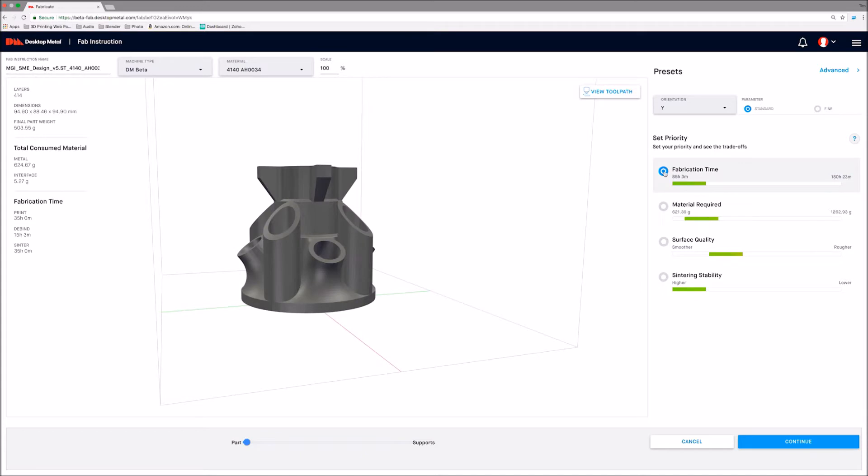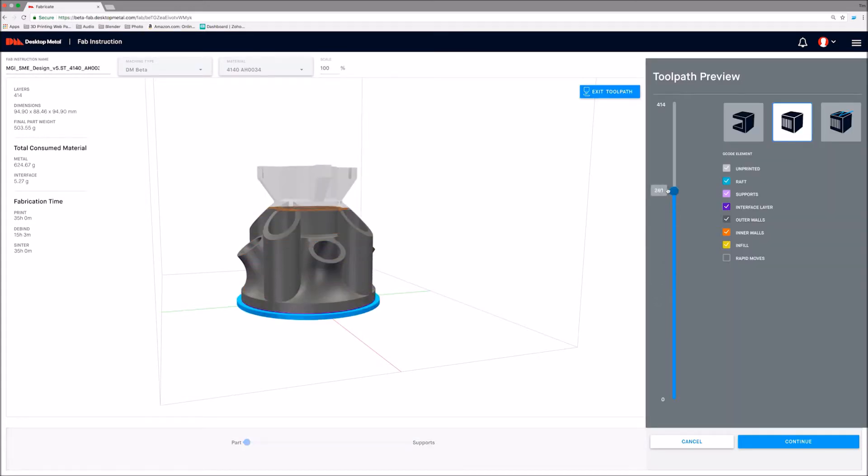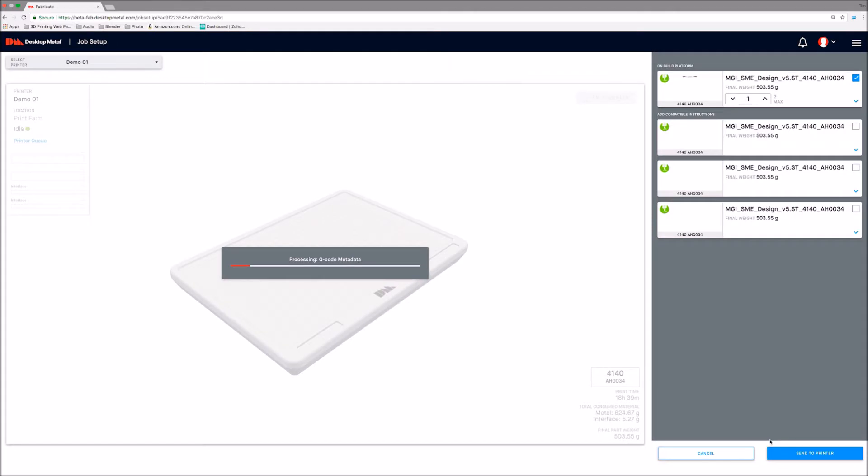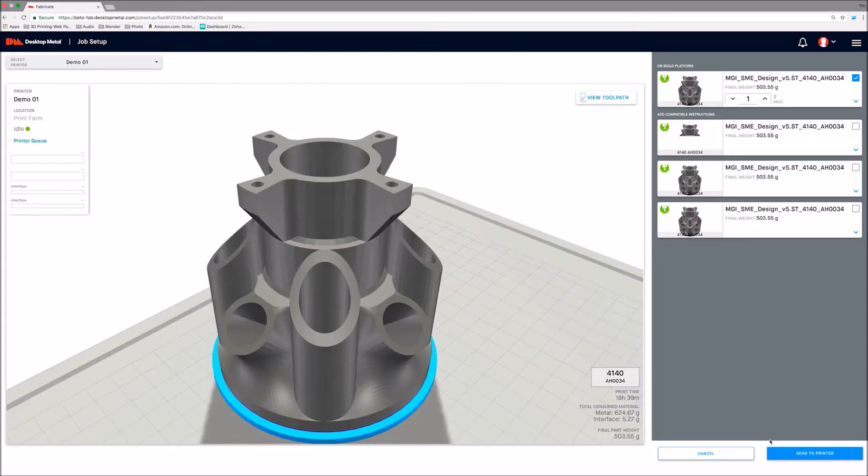The user can interact with the part and view precise toolpaths through a dynamic interface. It then creates a unique build plan and identifies compatible parts from the queue that can be fabricated together.